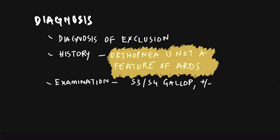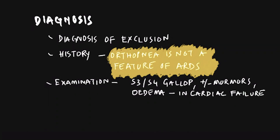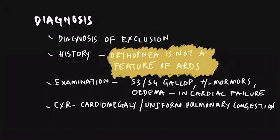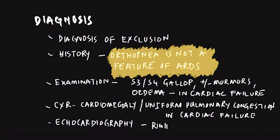Examination in cardiac failure will reveal S3, S4 gallop rhythm, probably murmurs, and dependent edema. Chest X-ray will show cardiomegaly and uniform pulmonary congestion in cardiac failure. Patients responding to diuretics indicate cardiac failure. In uncertain cases, echocardiography and in rare cases right heart catheterization is needed.